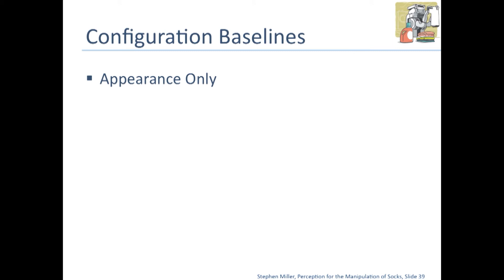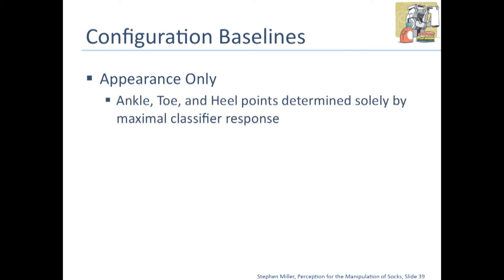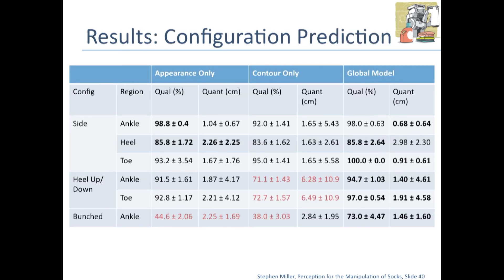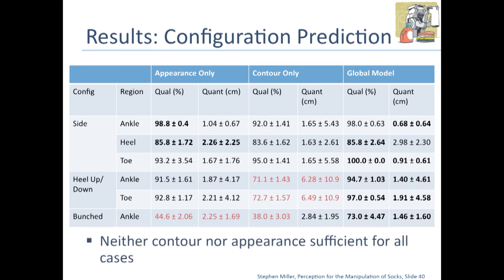We looked at a number of baselines: an appearance-only baseline where landmark locations are determined by the maximum classifier response, and a contour-only baseline where identical models are used but no appearance score is considered. As you can see, the global model performs very well in all cases, particularly in more difficult structures like heel-up, heel-down, or bunched. When it's more complicated to find the ankle and determine the structure, the global model vastly improves on the others. Neither contour nor appearance alone was sufficient for the bunched case — combining these cues together is more powerful than using any individually.